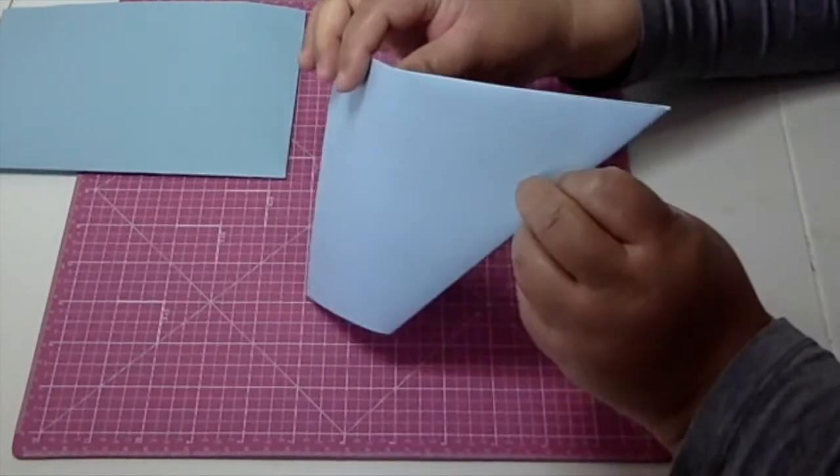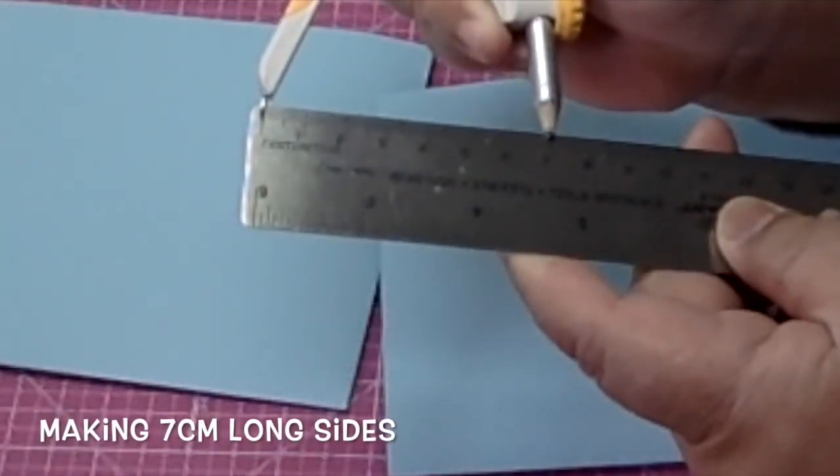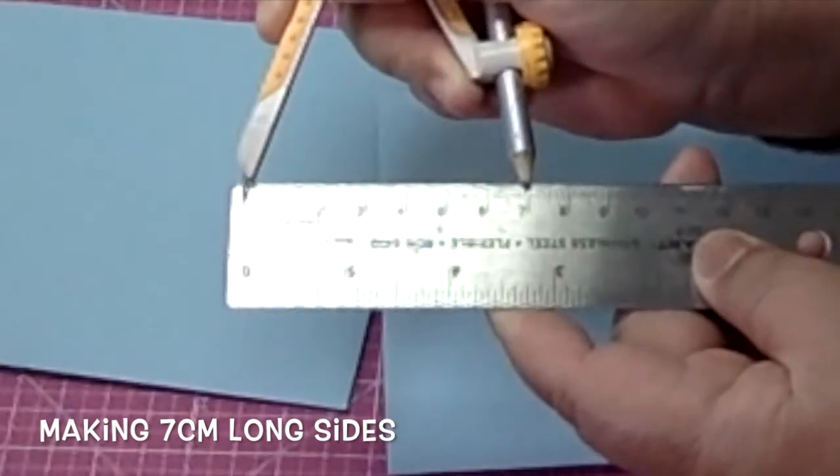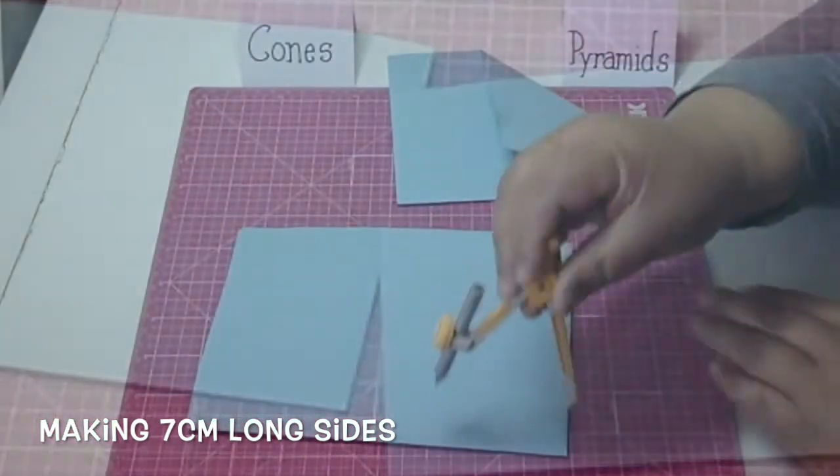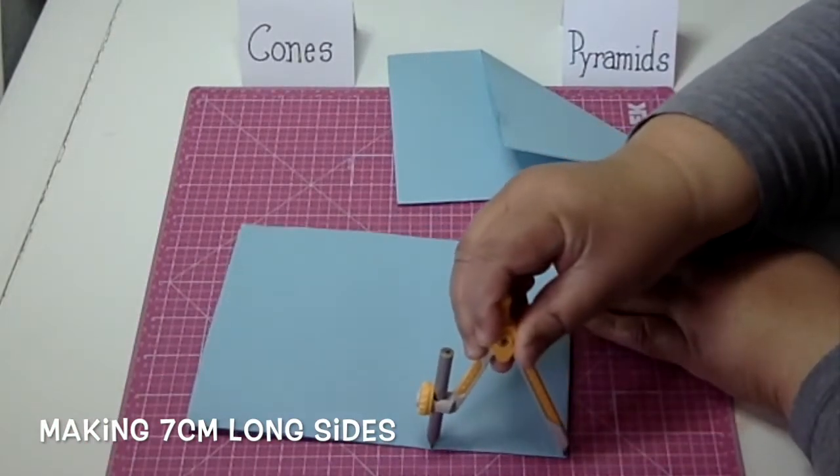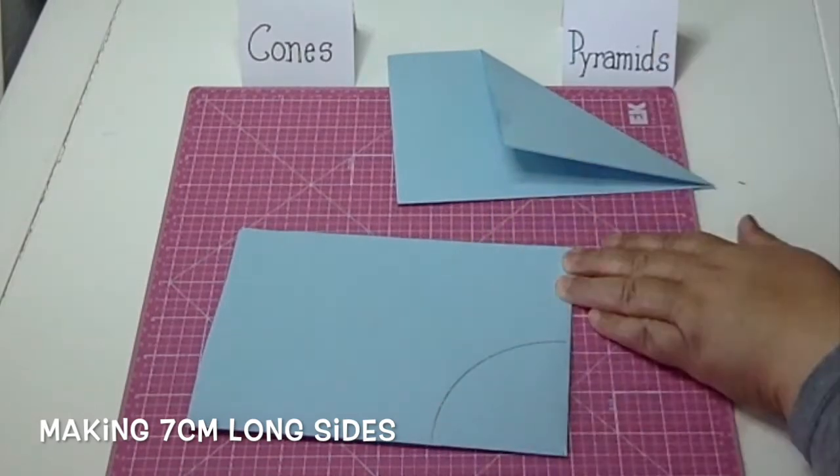Now to make the base, I want to make it the side to be seven centimeters long. So for the cone, the base is going to be a curve, so I take my compass and I make my curve.